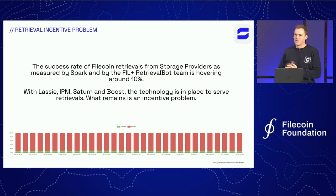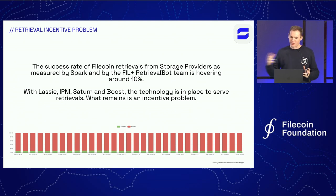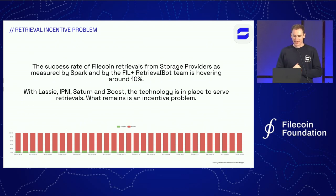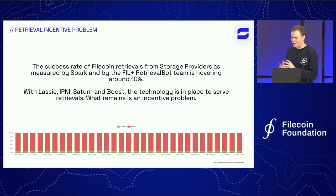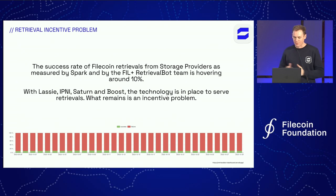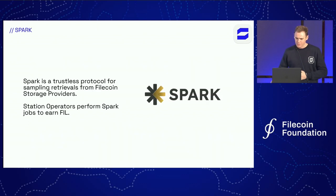Here I'm going to highlight exactly what this retrieval incentive problem looks like. The Fill Plus team had a team working on retrievals and building a retrieval bot which would make retrieval samples against storage providers, and the Spark team has done the same. We found that the success rate of making retrievals against storage providers is hovering at around 10%, which is not good enough. We have to improve this with incentives. We've got the rails in place to make these retrievals with Lassie, IPNI, Saturn, Titan, Boost, and all these technologies, but we haven't got the incentives in place to make this a successful flow.